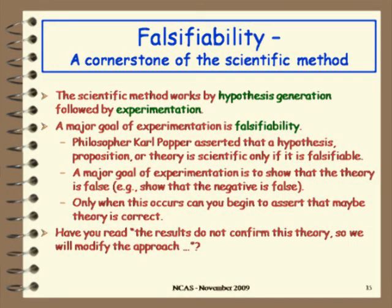Falsifiability is also not mentioned as one of the cornerstones of the scientific method. The philosopher Karl Popper — who has become sort of the patron saint of science — asserted that a hypothesis or theory is scientific only if it's falsifiable. The major goal of experimentation is to show that some theory is false. In other words, you want to show that the negative is false, so that the hypothesis you're presenting might possibly be true.